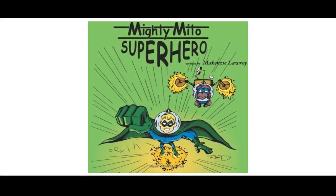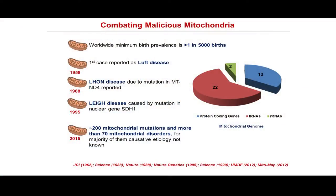Mitochondrial disorders are so prevalent that there are even comic books written on them. One example is 'Mito-Mito Superhero' written by Mackenzie Laurie, a 9-year-old girl, for her 6-year-old brother Gelvin who suffered from mitochondrial disorders. Unfortunately, the prevalence of mitochondrial disorders is 1 in 5,000 live births. The first case was reported as Luff disease in 1958, and later disorders such as LHON disease due to mutations in the ND4 gene and Leigh disease due to mutations in the SDH1 gene were characterized.